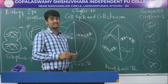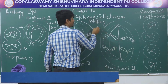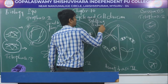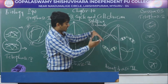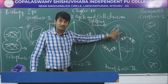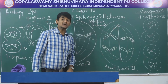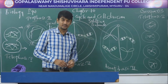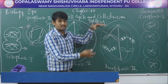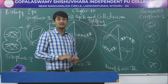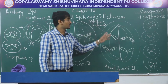In anaphase 2, the stage begins with the simultaneous splitting of the centromere. The centromere holds sister chromatids, and these chromatids move towards opposite poles along with spindle fibres. Finally, at the end of each cell there are two groups of haploid chromosomes.